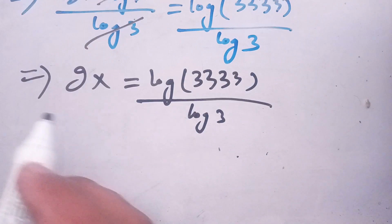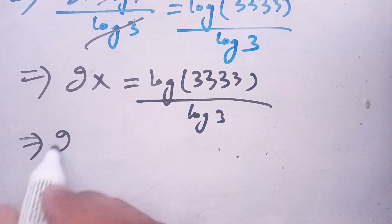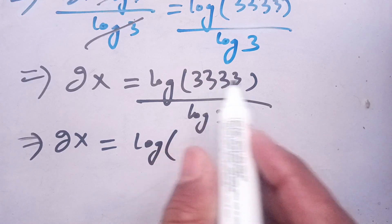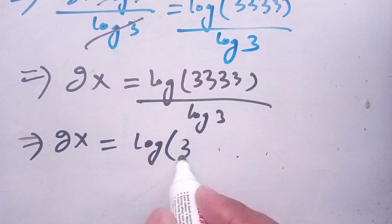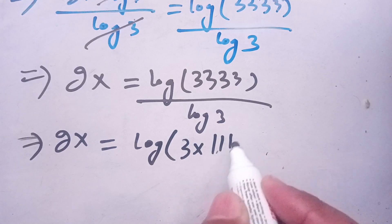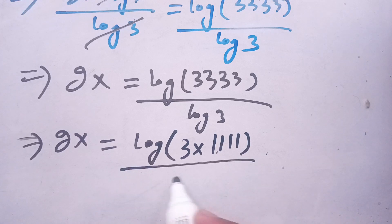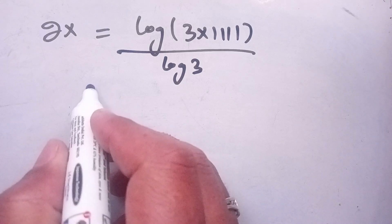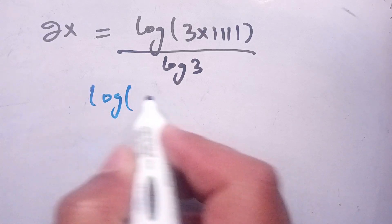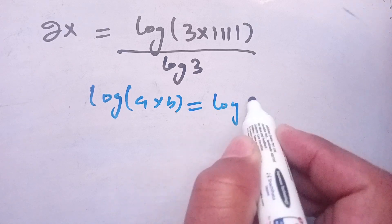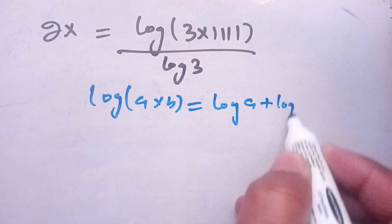In the next step, we write 3333 as 3 times 1111, so 2x is equal to log of 3 times 1111 divided by log of 3. By the logarithm identity, we know that log of a times b is equal to log of a plus log of b.